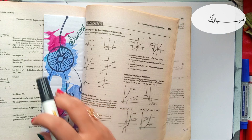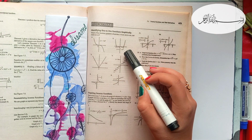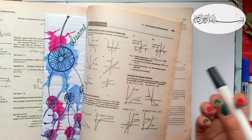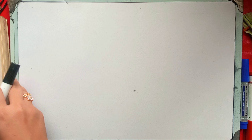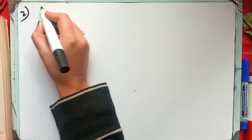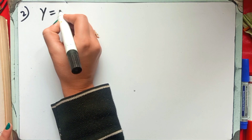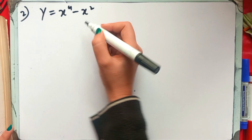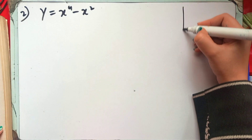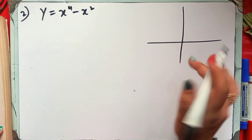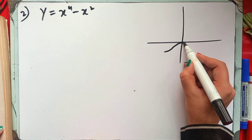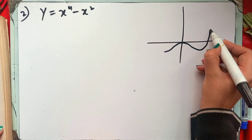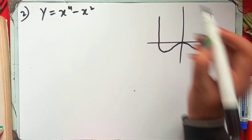We are now on question number 2. We will see if this graph is a one-to-one graph or not. I hope question number 1 was understood. So first I will write my function here. We have function: y is equal to x to the power 4 minus x squared. If we make this graph, I will make a rough sketch — something like this.